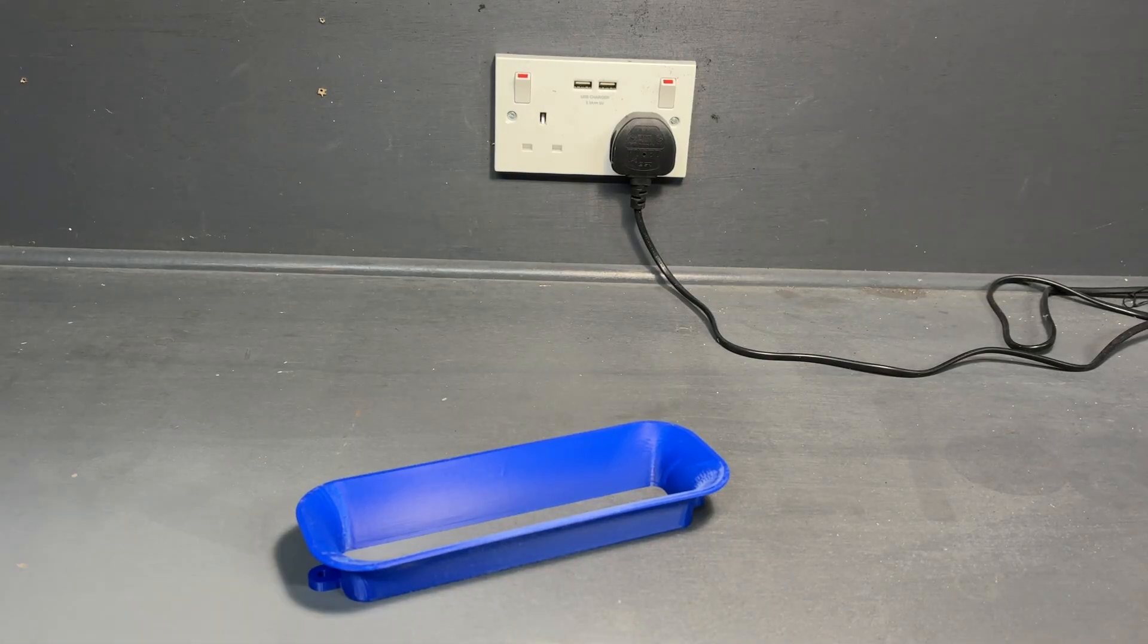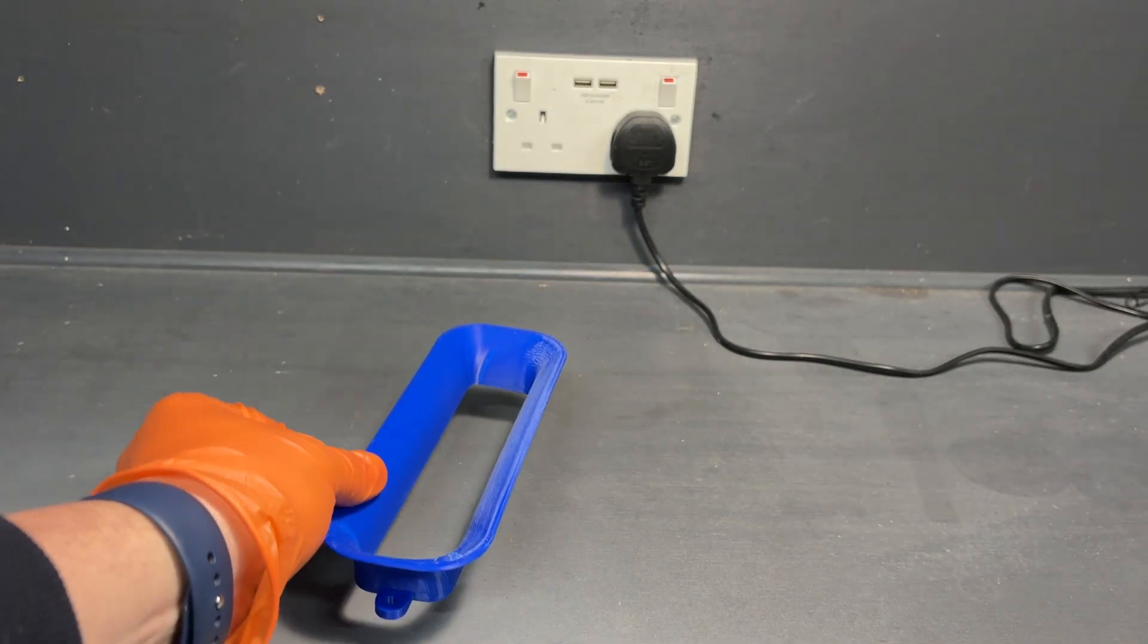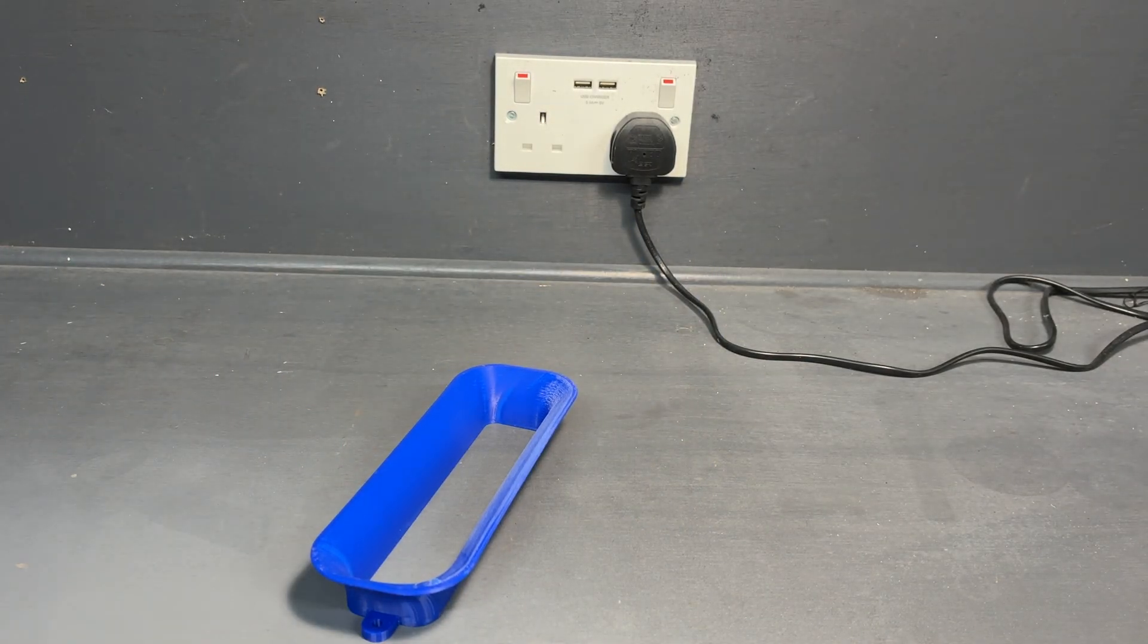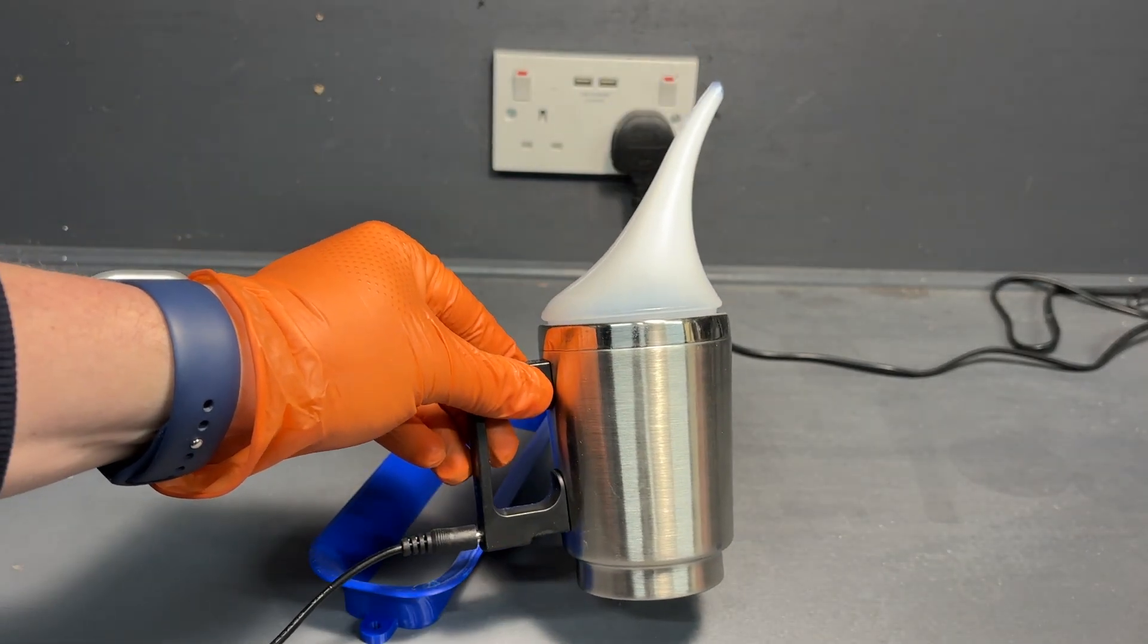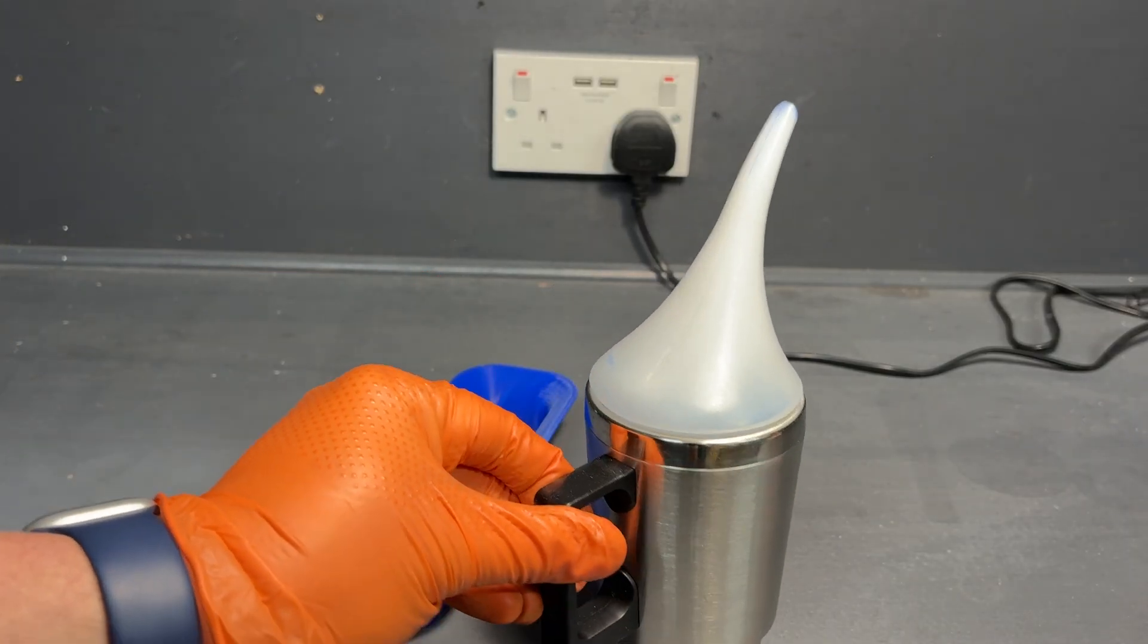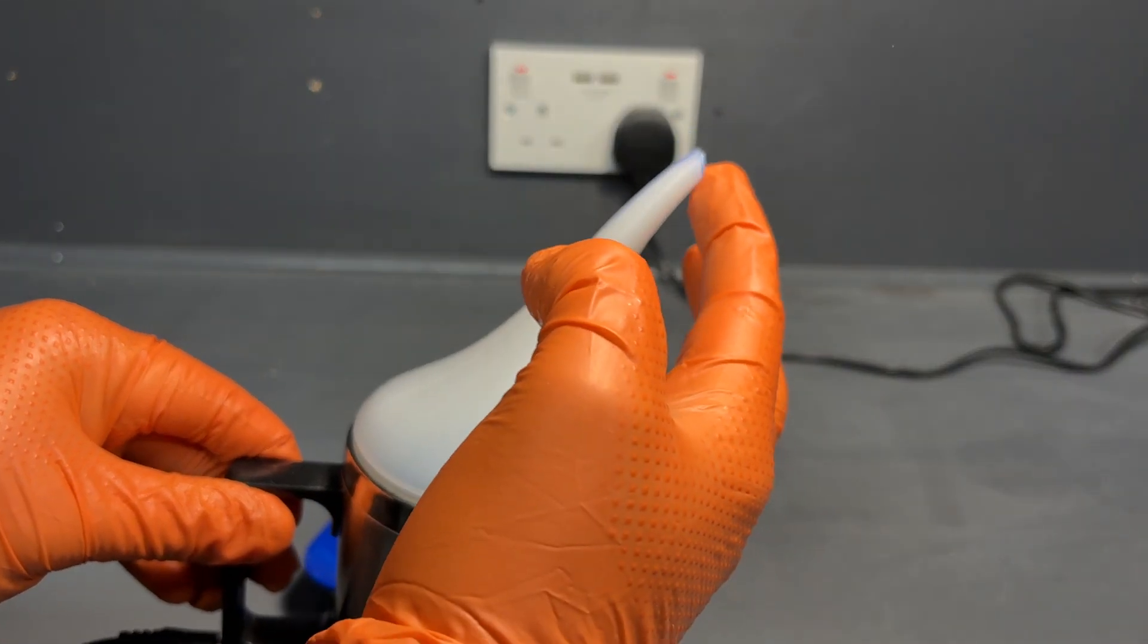Hi guys, tonight's video is a quick guide on how to vapor smooth ABS plastic using acetone. I'm using one of these headlight restoration kits you can get on Amazon. You pour acetone into this container and the vapor comes out the top.